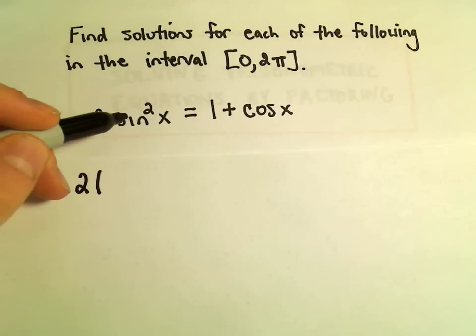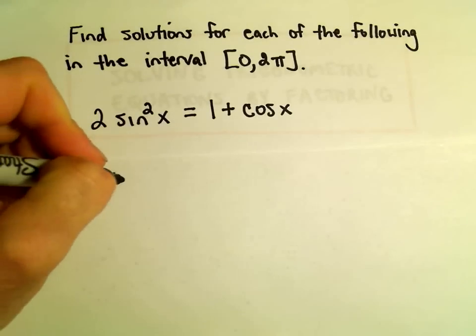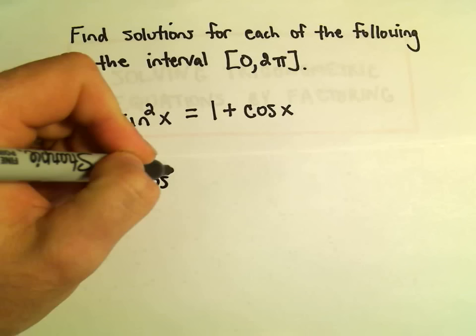Recall that sin²x + cos²x = 1. So if we solve for sin²x, we would get 1 - cos²x.